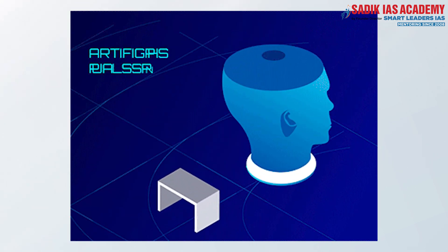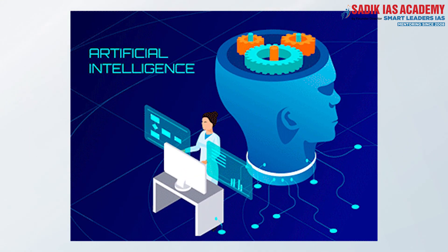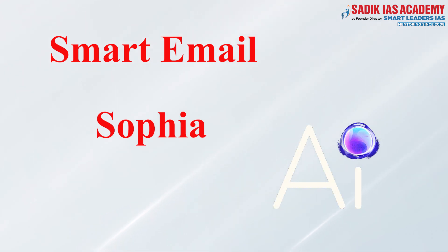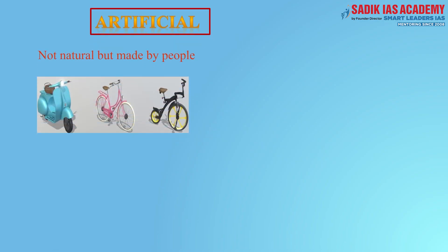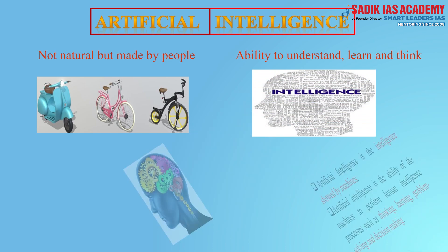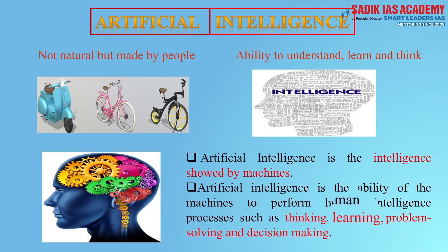In all the examples I have given, the underlying technology is artificial intelligence. From the smart algorithm used in email categorization to the smart robot Sophia, all comes under artificial intelligence. Now let's see what artificial intelligence is. The meaning of artificial is something not natural, but made by people. Intelligence is the innate ability of human beings to think, learn, and understand. Bringing this intelligence process — such as thinking, learning, and problem solving — into an artificial machine is called artificial intelligence. That is, artificial intelligence is the intelligence showed by machines.